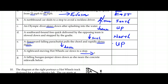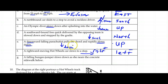A rightward-moving hot wheel car slows to a stop. To slow it to a stop, the acceleration must be opposite to right, which is going to be left. Hopefully you can start to see that we could call right positive and left negative, or down negative and up positive — turning this into a mathematical way of looking at these things.